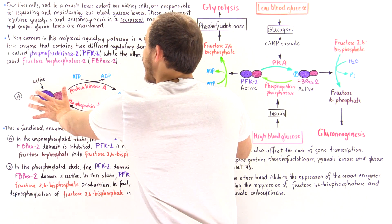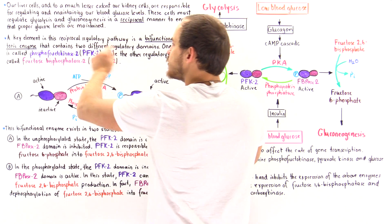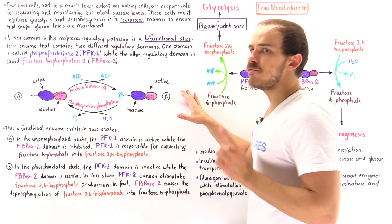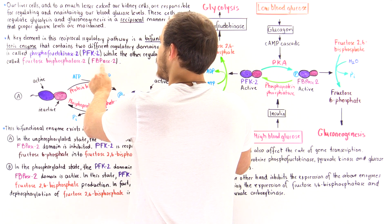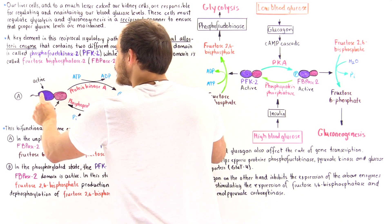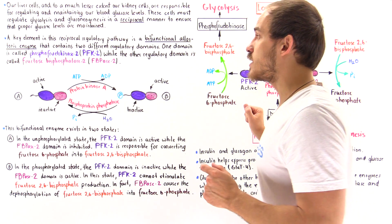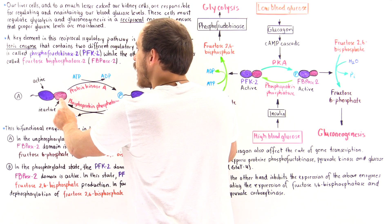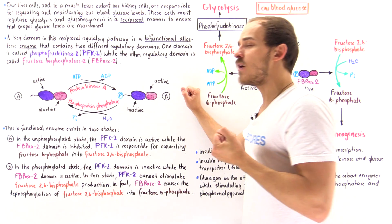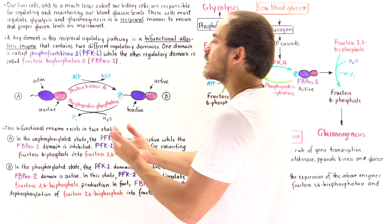This bifunctional allosteric enzyme has two different domains. One domain is known as the phosphofructokinase 2 domain (PFK2), and the other is known as the fructose bisphosphatase 2 domain (FBPase2). Because PFK2 ends in 'kinase,' its function is to attach a phosphoryl group onto a molecule. Because FBPase2 is a phosphatase, its function is to remove a phosphoryl group — exactly opposite functionality.